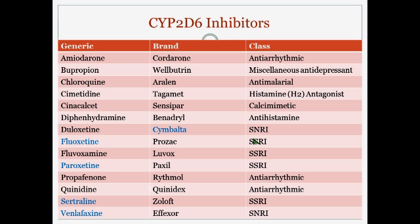Here is a list of CYP2D6 inhibitors — not all-inclusive, but a good starting point. Cymbalta, fluoxetine, paroxetine, sertraline, and venlafaxine are all ones we talked about today. Some of them are also metabolized by 2D6. This chart lists the 2D6 inhibitors and identifies what type of medication each one is.